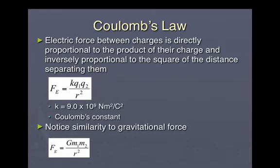Both involve a constant. The gravitational force constant G was 6.67 times 10 to the minus 11. Notice that Coulomb's constant is very big — a 9 followed by 9 zeros — and that's because charges are so small. Where the gravitational constant was extremely small because the masses of planets tend to be very large. But they both share that same idea: directly proportional to the product of either mass or charge, but inversely proportional to distance squared, which means as distance gets bigger between two objects, the force decreases by 1 over r squared.